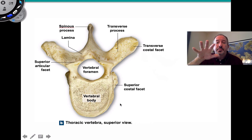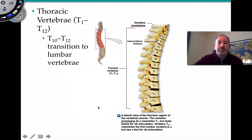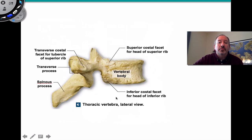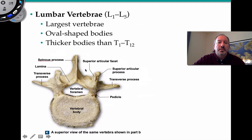Looking at the thoracic vertebrae from a superior view, you can see T1 through T12 progressing inferiorly, with T10 to T12 being a transition zone into the lumbar area. In a lateral view, the long, thin spinous process and the transverse processes coming off perpendicular on both sides are clearly visible.